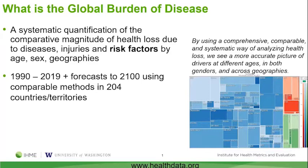What we do every year is put out annual numbers of disease burden starting from 1990 to the present year. We're also about to do this for forecasts, extending to 2100 for all of the diseases and risk factors. Importantly, this uses comparable methods, so it's an apples-to-apples comparison, done in now 204 different countries and territories around the world.